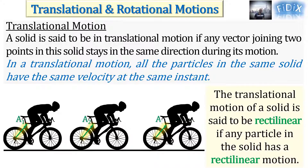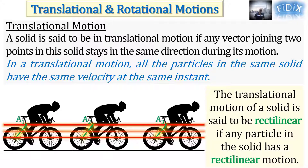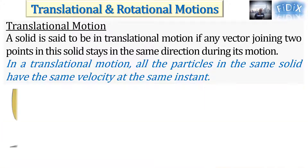Since any particle in the solid has a rectilinear motion, the thickest red line represents the rectilinear trajectory of a particle A in the solid at three different positions A1, A2, and A3. The two other red lines also show the rectilinear trajectories of two other particles in the same solid.